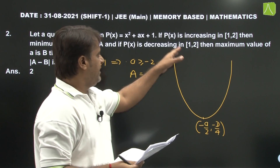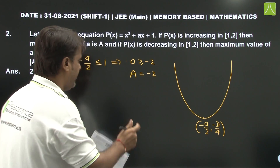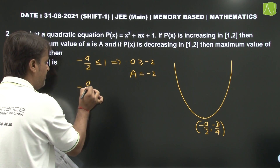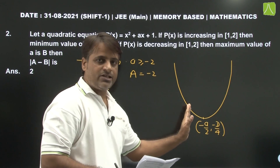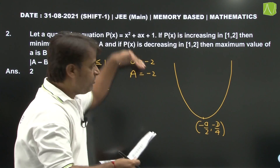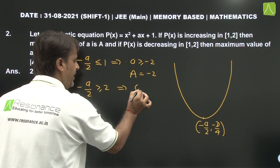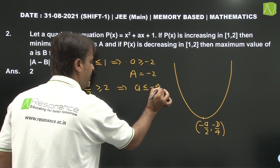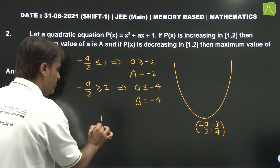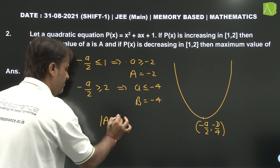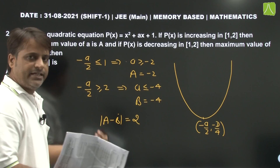For the decreasing interval condition, a is less than or equal to minus 4. So maximum value of A, which is B, equals minus 4. Therefore mod of A minus B equals mod of minus 2 minus minus 4 equals mod of 2, so the answer is 2.